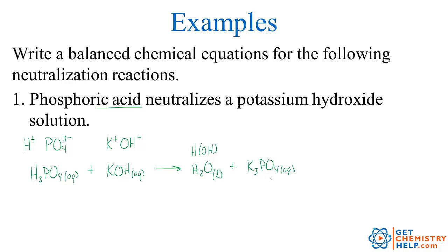The last step is always to check and make sure the reaction is balanced. We have three hydrogens on the left-hand side, one hydrogen on the right-hand side. Remember: balance the hydrogens in the hydroxide separately from the hydrogens in the acid. Three hydrogens in the acid, one hydrogen in the water — so this needs to become three waters. That makes three hydroxides, so potassium hydroxide needs a coefficient of three. That makes three potassiums, and the products also have three potassiums. There is one phosphate on each side, so that reaction is balanced.